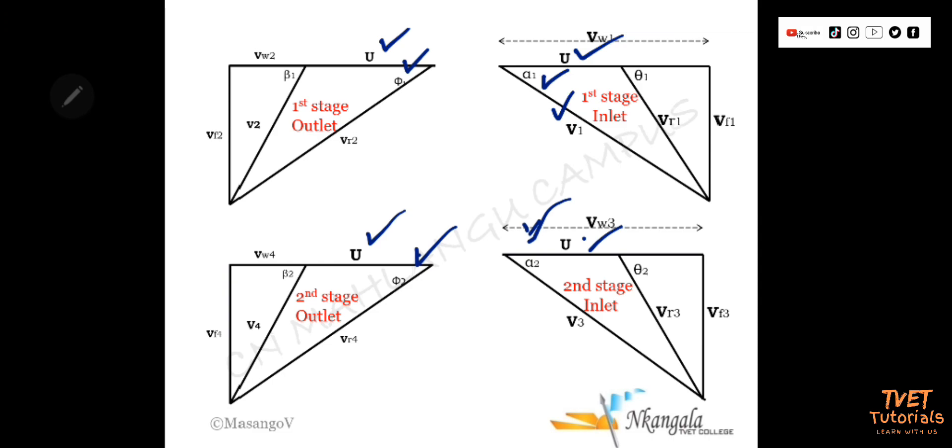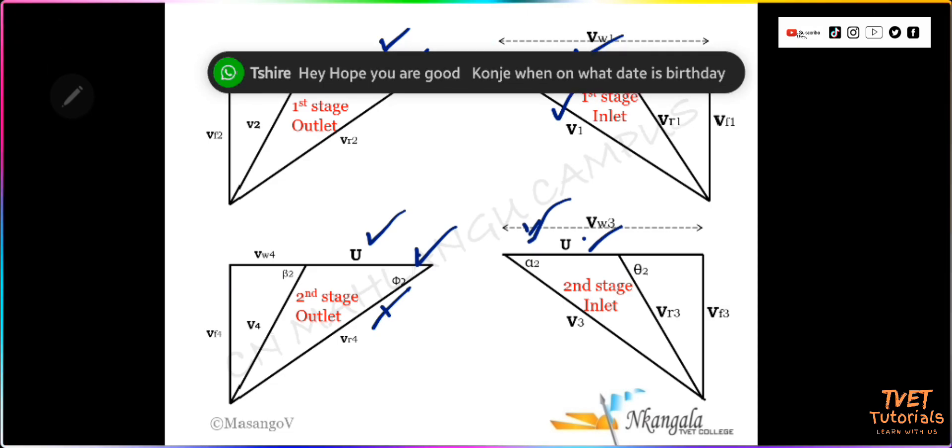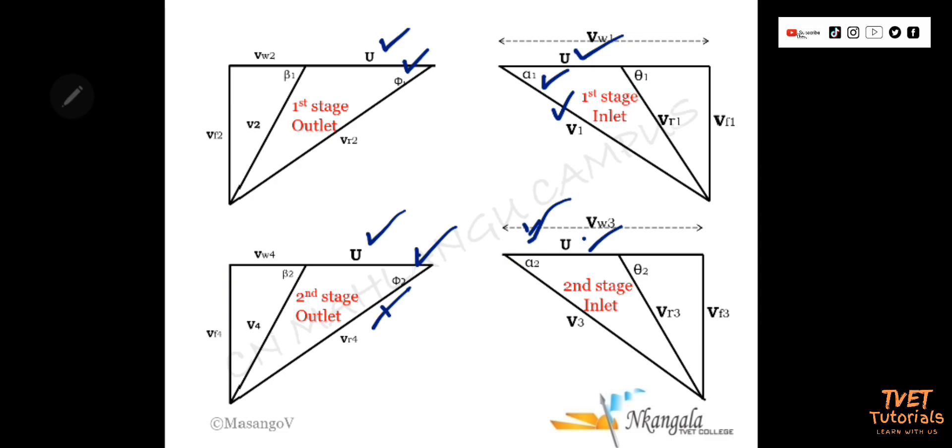So now we can see which data points we are given. Remember that in order to determine where to start, we need to have three data points on the triangle where we are starting. Based on this information, we can only start at the inlet of the first stage. That is where we have three data points: u, alpha 1, and V1. Normally students find it easy to start drawing a velocity diagram when they are given u, alpha, and V1. So you start here at the inlet of the first stage.